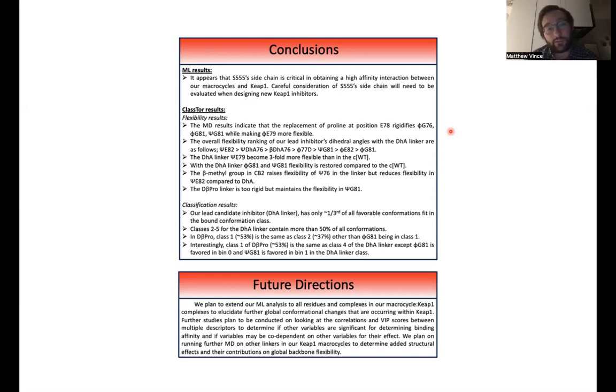In terms of the classification results, our lead candidate inhibitor, the DHA linker, is only about a third of all favorable conformations fit in the bound conformation class. And classes two to five of the DHA linker contain more than 50% of all conformations, which was one of the most critical findings from this study.